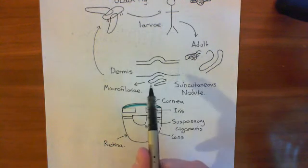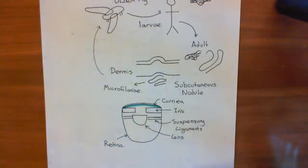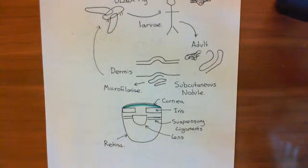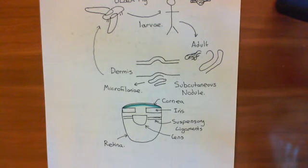and what it does is it's going to go into the Onchocerca volvulus parasite, and it's going to activate the GluCl channels within that parasite, and that's going to lead to over-conductance of chloride anions into the neurons within that Onchocerca volvulus parasite,